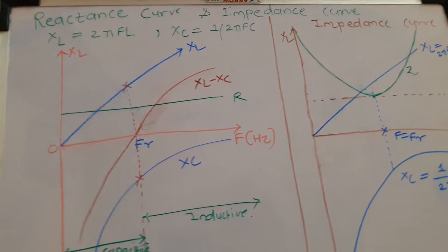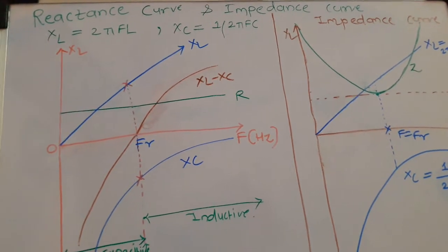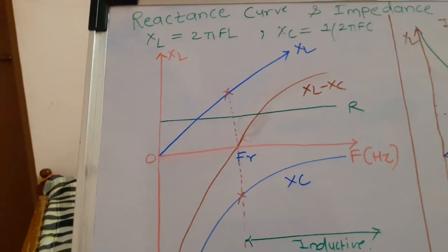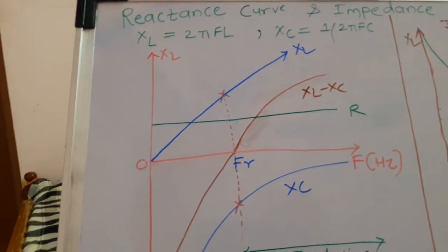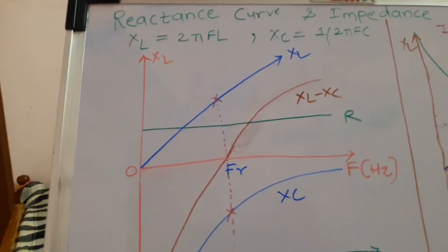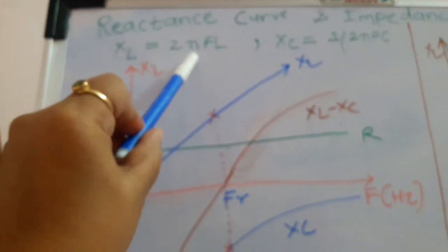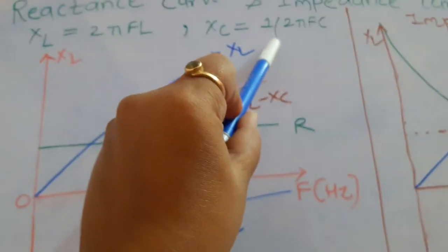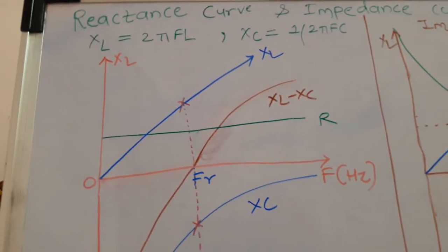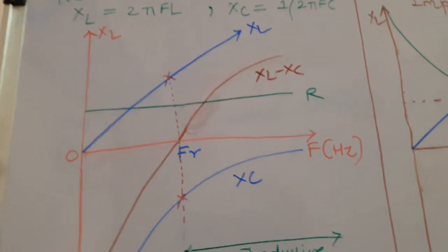Let us see a very important topic of series resonance: reactance curves and impedance curves. We will first concentrate on the left hand side, that is reactance curves. Reactance is the opposition to current flow through an inductor and capacitor. The formulas are: inductive reactance XL = 2πfL, and capacitive reactance XC = 1/(2πfC). There is a direct relation between frequency and inductive reactance.